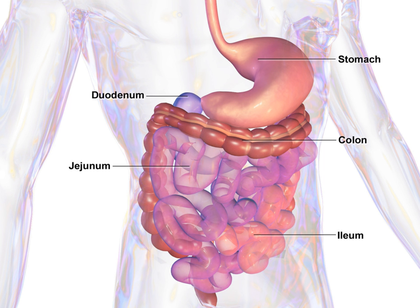The jejunum is the midsection of the small intestine, connecting the duodenum to the ileum. It is about 2.5 meters long, and contains the circular folds also known as plicae circulares, and villi that increase its surface area. Products of digestion — sugars, amino acids, and fatty acids — are absorbed into the bloodstream here.